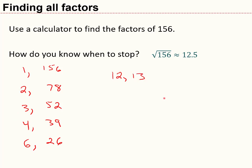At this point we have listed all of our factors. Once I've reached 12, I know I'm done. So the factors of 156 are: 1, 2, 3, 4, 6, 12, 13, 26, 39, 52, 78, and 156. That's a good place to stop — we've finished chapter 4A. We've talked about factors, divisibility tests, and the method for finding all factors of a given number.